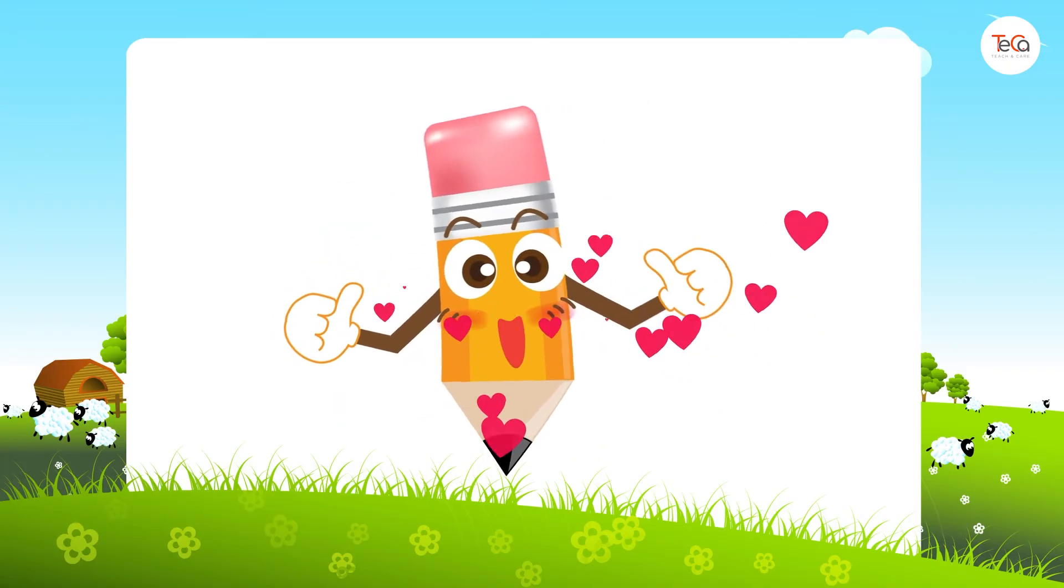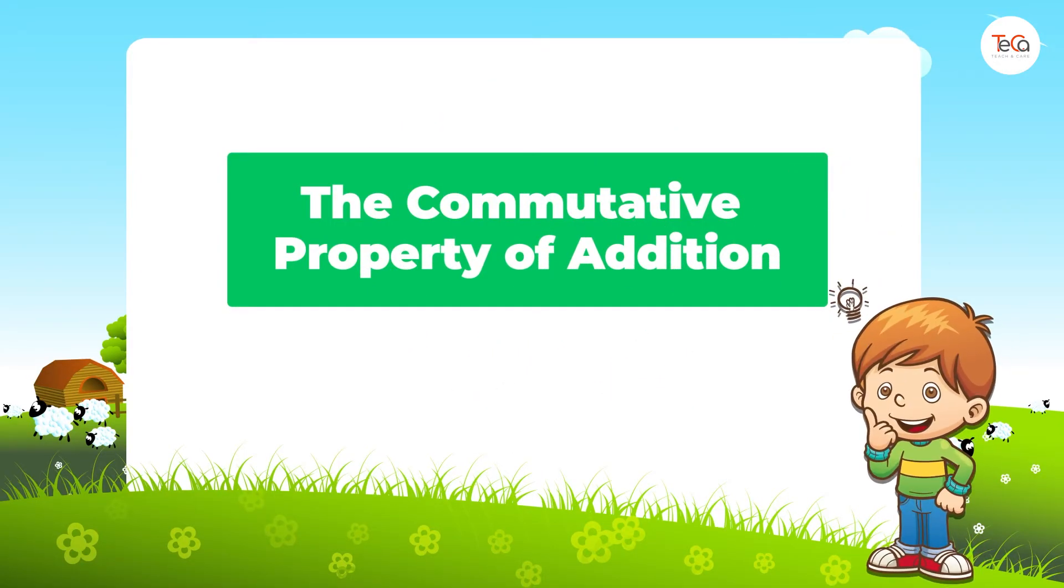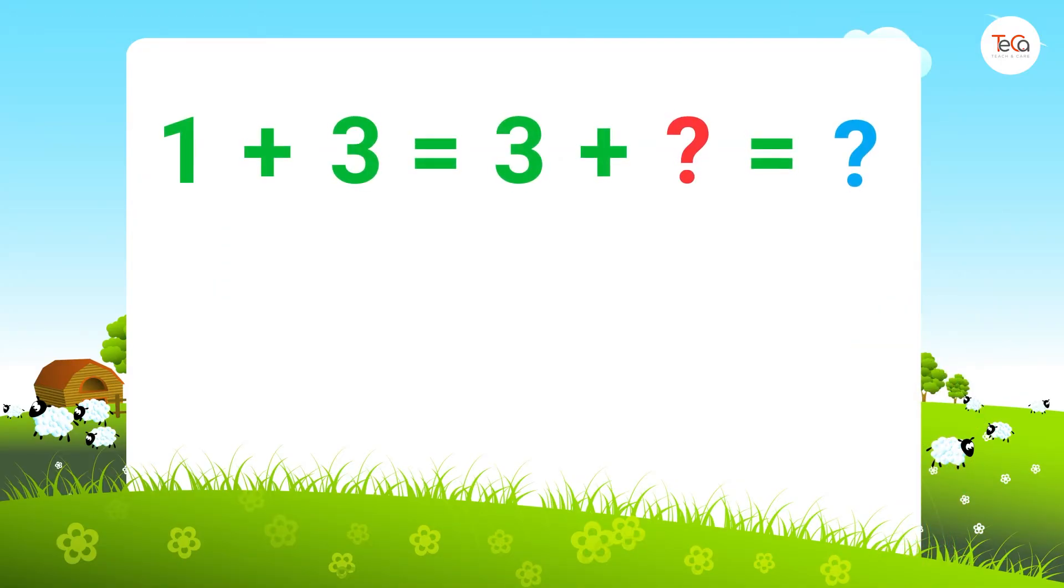Now let's find the answers together. By the commutative property of addition, we can easily have 1 + 3 is the same as 3 + 1.